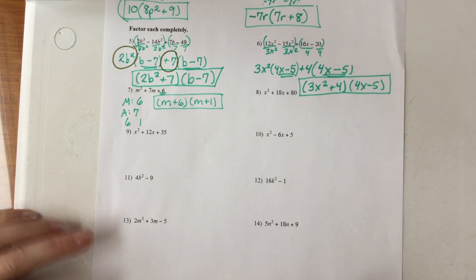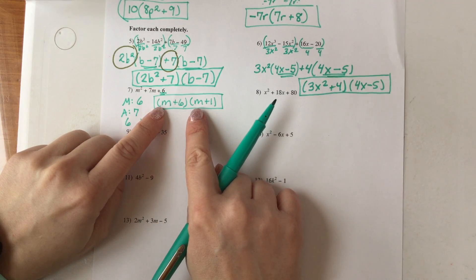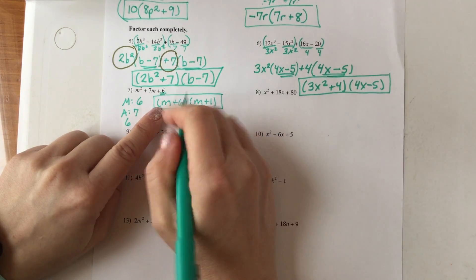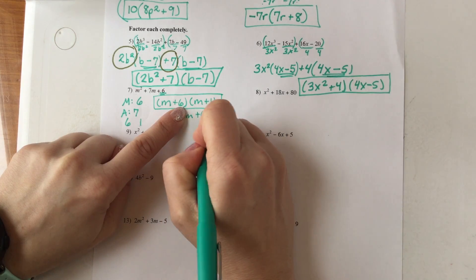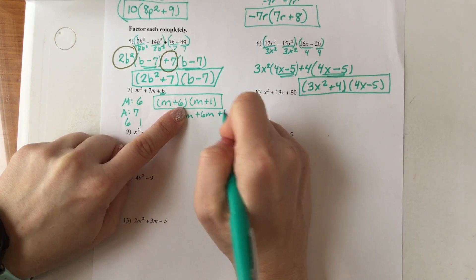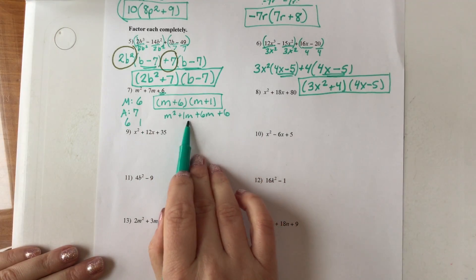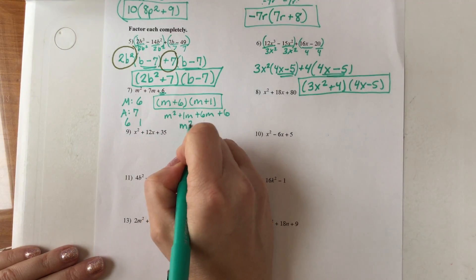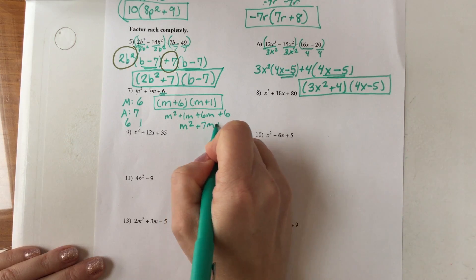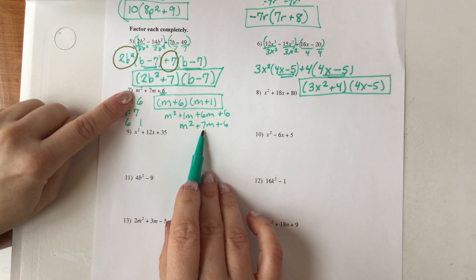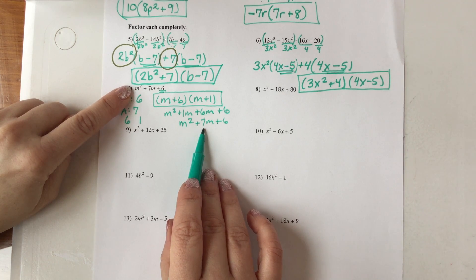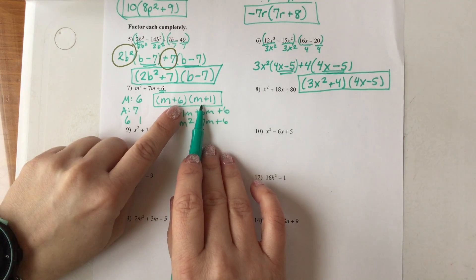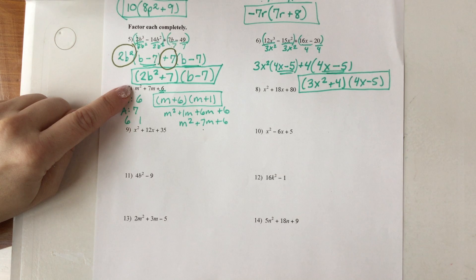Same idea here — if I FOIL (M + 6)(M + 1): M times M is M², M times 1 is M, 6 times M is 6M, 6 times 1 is 6. Combining the middle two terms: 1M plus 6M makes 7M plus 6. That is the original problem. Think of it as the opposite of FOILing — you're finding the two groups you can multiply to get back to the original.